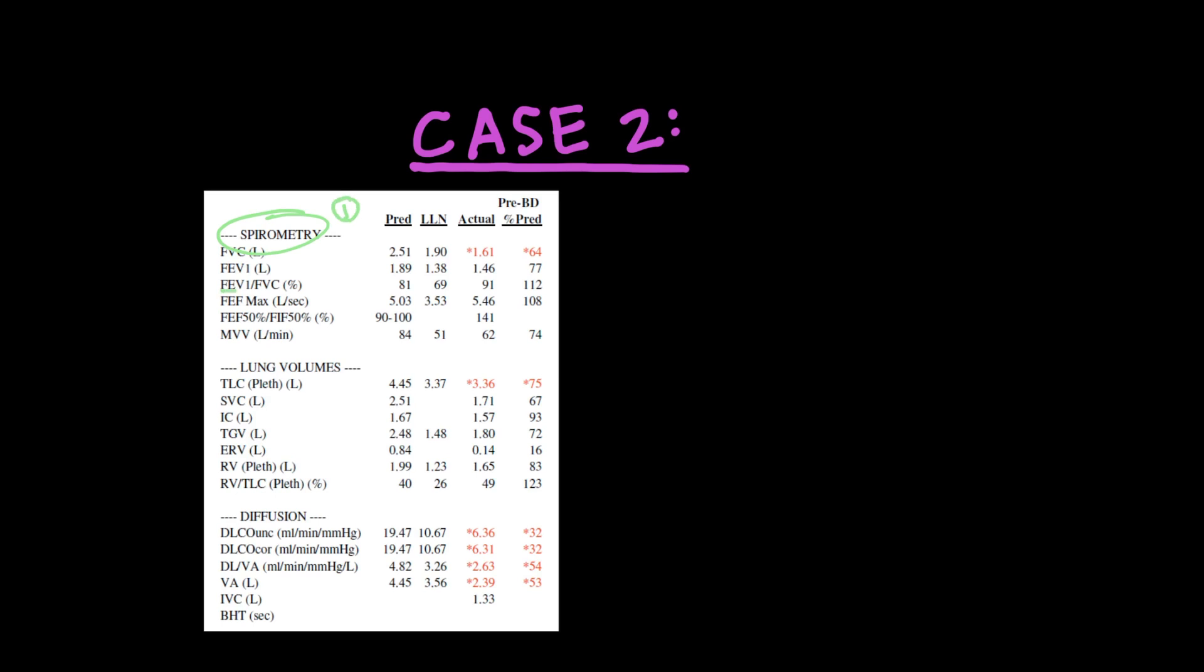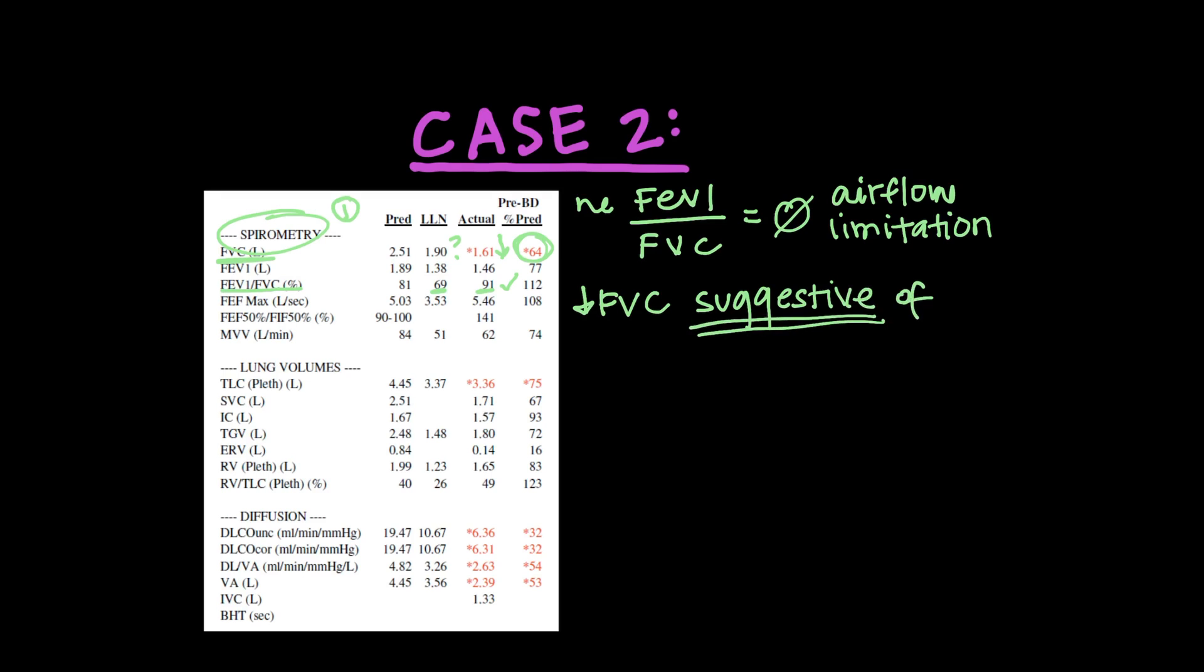So case two. So again, number one, look at spirometry. What do you look for? The FEV1 to FVC ratio, lower limit of normal 69. This patient's 91. They're doing great. So that's normal. So a normal FEV1 to FVC ratio means that this patient does not have airflow limitation. The next thing we want to look at is why is that number at the top red? So the FVC, the forced vital capacity, is low in this person. And while that cannot tell us anything definitively, it can suggest that their TLC may also be low. So good thing we always look at the lung volumes next.